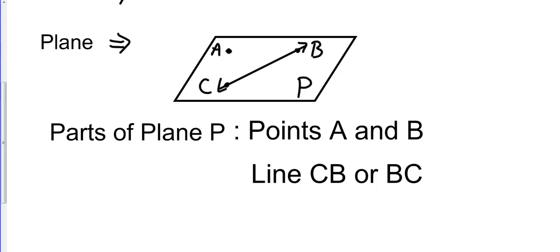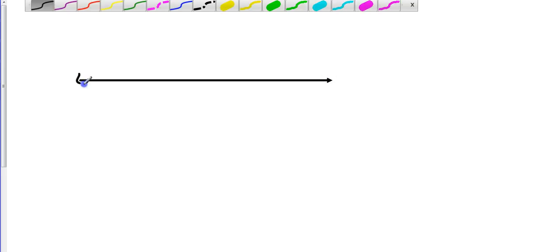And so later in the problems, they're going to ask you different examples. What would certain things be? What are some classifications of points? So let's go to a new page. If I have a line and on it are points A, points B, and points C, there is a relationship between A, B, and C because they are on the same line.